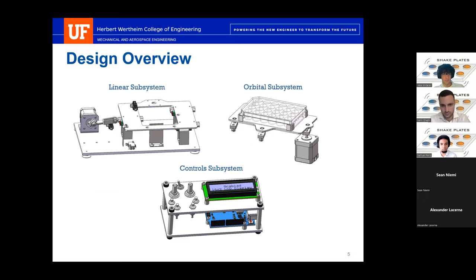We have three subsystems: the linear subsystem in the top left, the orbital subsystem in the top right, and double orbital is a combination of those two. Below those is the control system.